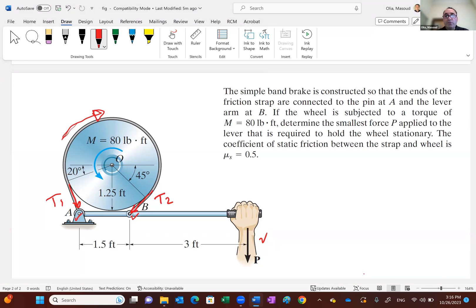So it says determine the smallest force P. So force P is unknown here, to the lever that is required to hold the wheel stationary. So this is not actually moving, but the impending motion is clockwise. That's why we pick T1 to be in the opposite direction of motion. The coefficient of static friction between the strap and the wheel is 0.5.